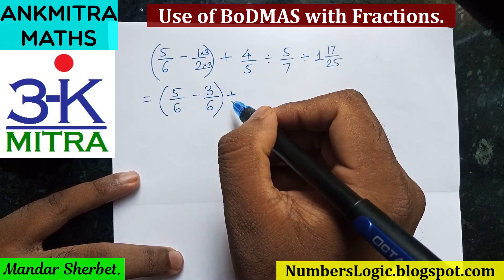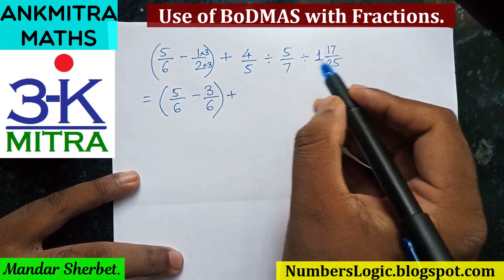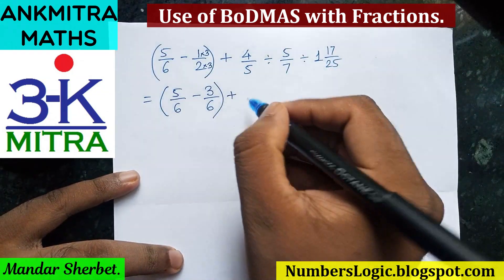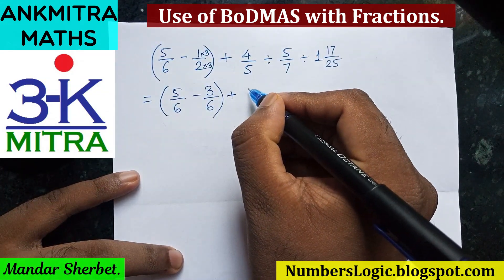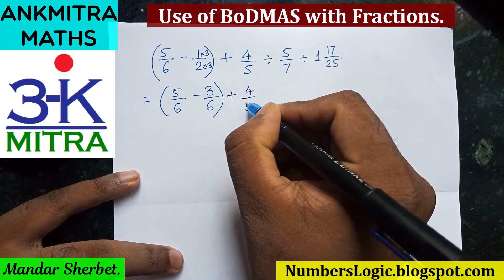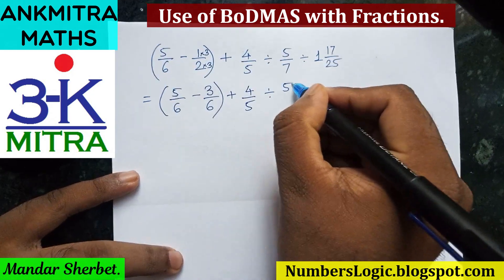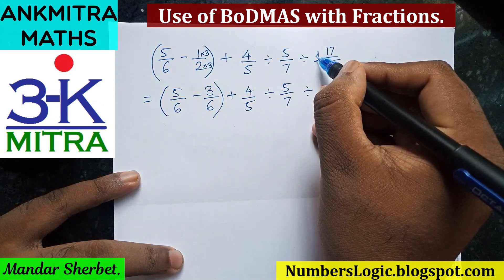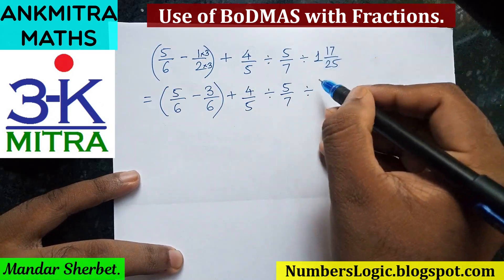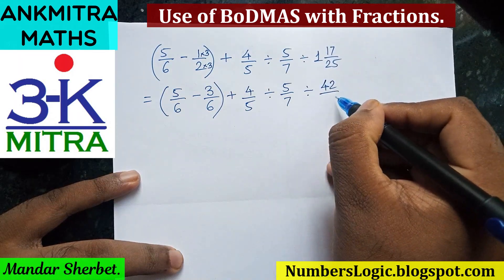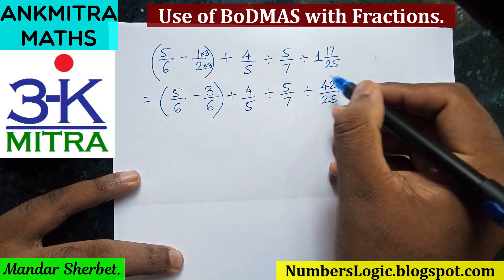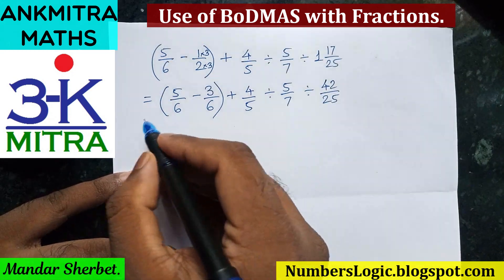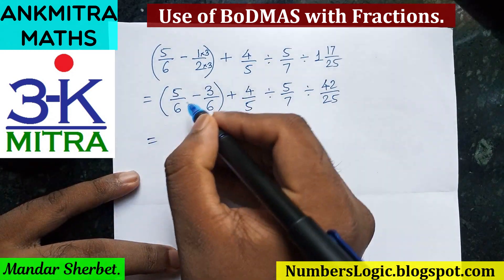The addition sign will remain as it is and will be solved last. Now we simplify the mixed fraction: the rest of the terms are written as four upon five, divided by five upon seven, divided by the mixed fraction. One times 25 plus 17 is 42, so the numerator is 42 upon 25 — that is the simple fraction form of the mixed fraction.